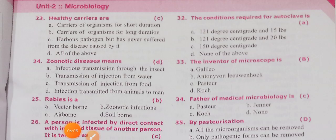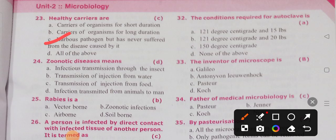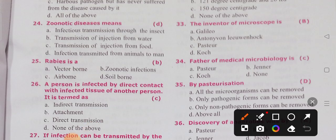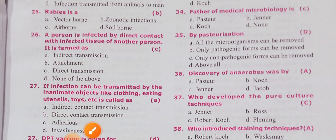Healthy carriers — option C — harbor a pathogen but have never suffered from the disease caused by it. Zoonotic diseases involve study of animals; option D: infections transmitted from animals to man.